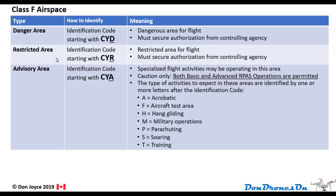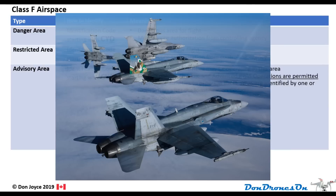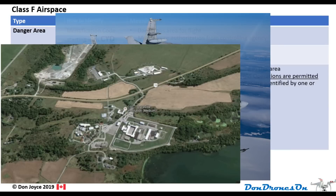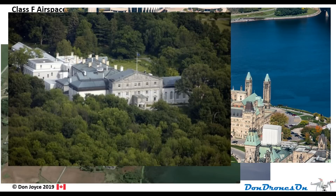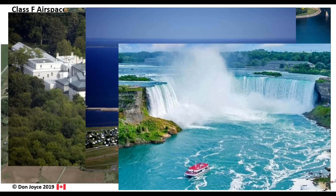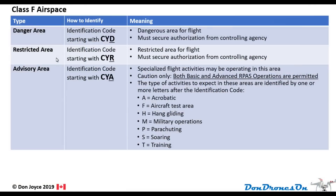The second kind of area is called a Special Use Restricted Area. These ones you really do need to worry about as a drone flyer. There are 94 class F restricted areas across Canada. They are typically around military facilities, prisons, and a few other special places.